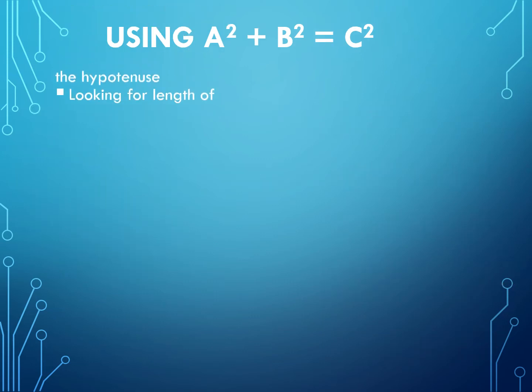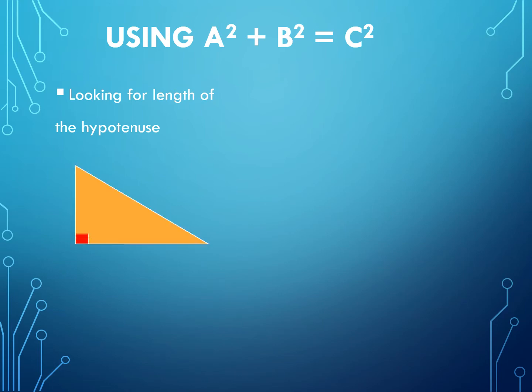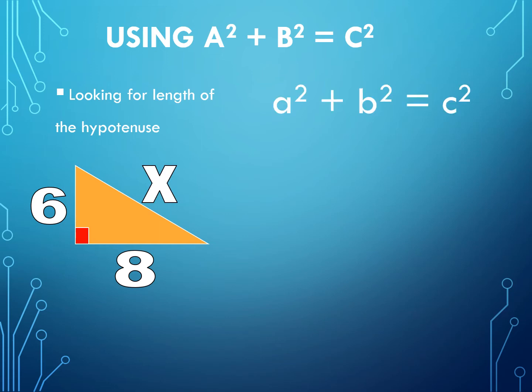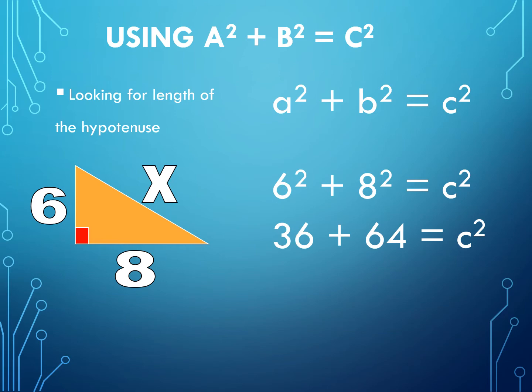Now let us have another one — looking for the length of the hypotenuse. To compute for side X, we are going to use the Pythagorean Theorem: 6 squared plus 8 squared is equal to C squared. 6 squared is equal to 36, and 8 squared is equal to 64. 36 plus 64 is equal to 100, and the square root of 100 is equal to 10.